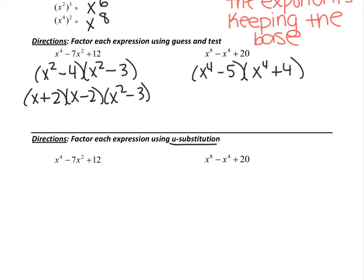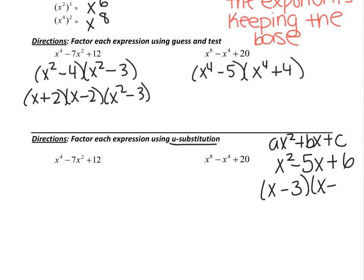Our goal is first to make these trinomials look like ax squared plus bx plus c, the basic form of a quadratic. For example, x squared minus 5x plus 6 factors as x minus 3 times x minus 2. That's easy to factor because the leading coefficient is 1 — you just need numbers that add to negative 5 and multiply to 6. So our goal is to take these trinomials and make them have an x squared term so they're easier to factor.